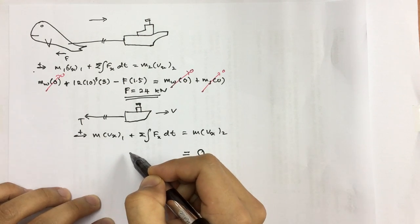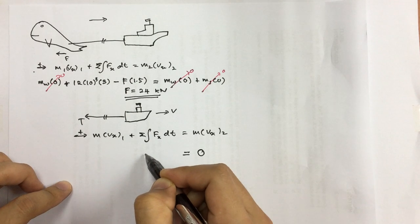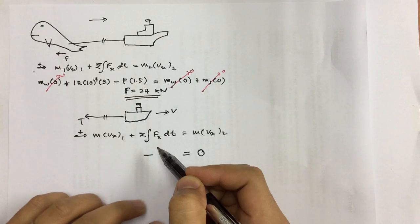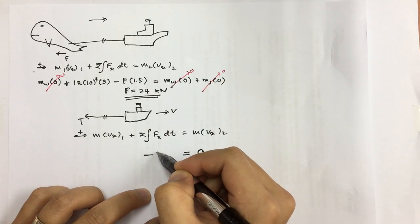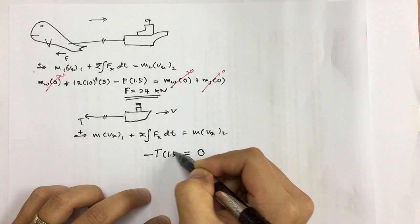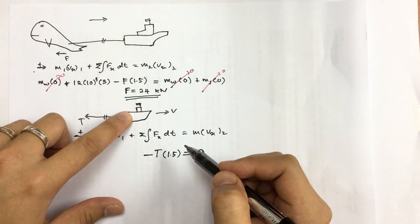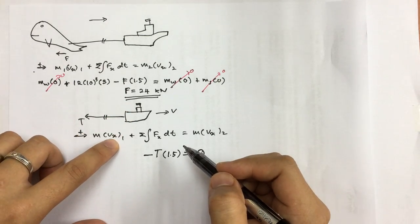We are trying to measure the tension force. This is the tension force going to the left. So this is going to be negative times T. The whole operation is 1.5 seconds. And here, we have the mass of the boat, the tugboat times its velocity.